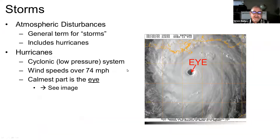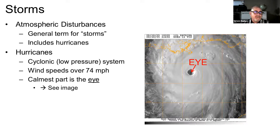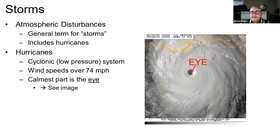Next, I want to talk about storms, and we call storms atmospheric disturbances. That's a general term for what we casually would call a storm. One type of atmospheric disturbance in particular I want to focus on, because it is one of the larger types of storms, is a hurricane. So we'll talk a little bit about hurricanes and then maybe just a little bit about other ones.